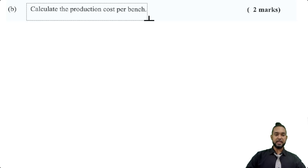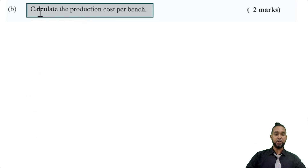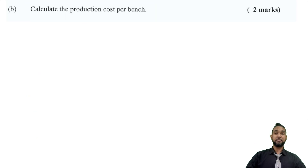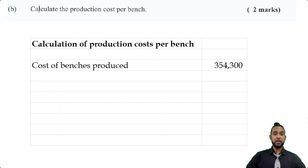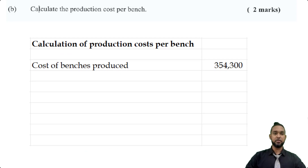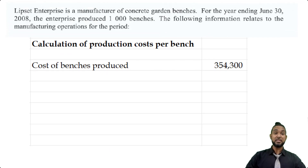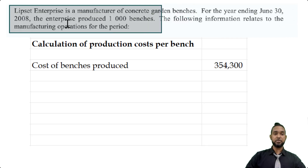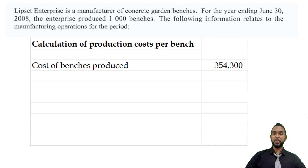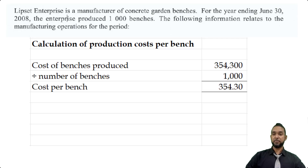Part B asks us to calculate the production cost per bench. We take the total cost of production, which we just found as $354,300, and divide it by the number of benches produced — a thousand benches, as stated in the opening paragraph. $354,300 divided by 1,000 gives us a production cost per bench of $354.30.